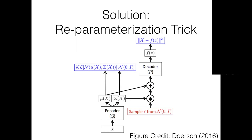This simple trick uses another source of samples and a function to convert them to the distribution of interest, creating a low variance gradient estimator with stochastic samples. Note that not all probability distributions can be applied with this trick — there are a few categories of distributions for which reparameterization applies. Gaussian random variables provide the simplest example.